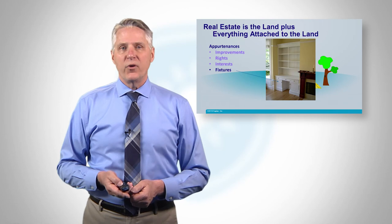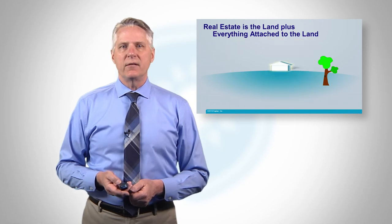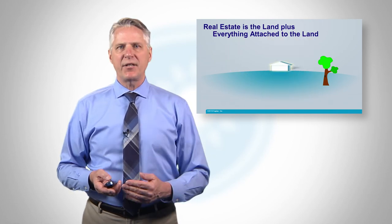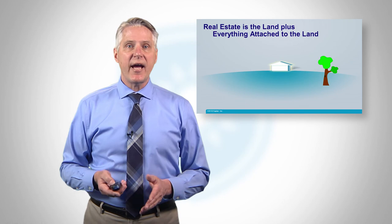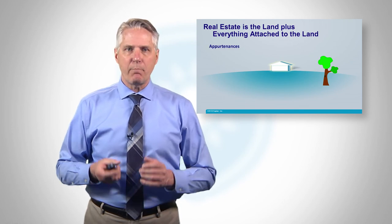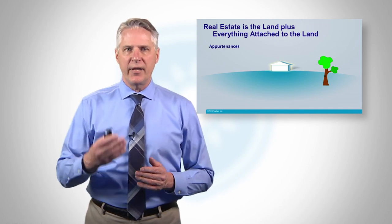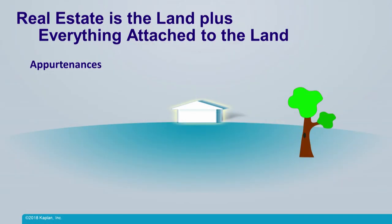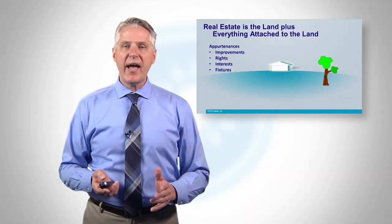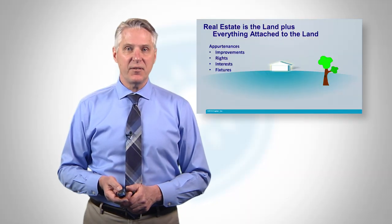So once again, real estate is the land plus everything attached to the land. We call these attachments appurtenances — it's appurtenant to the land. And appurtenances can be summarized as improvements, rights, interests, and fixtures. That's what real estate is.